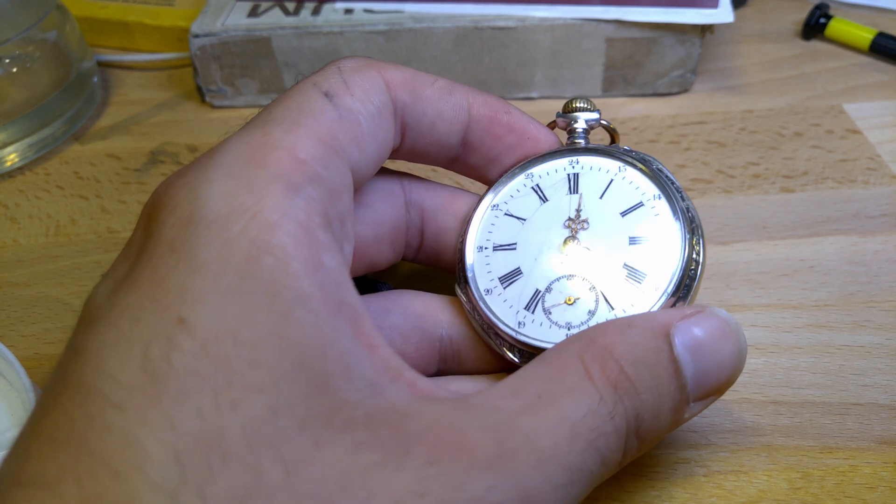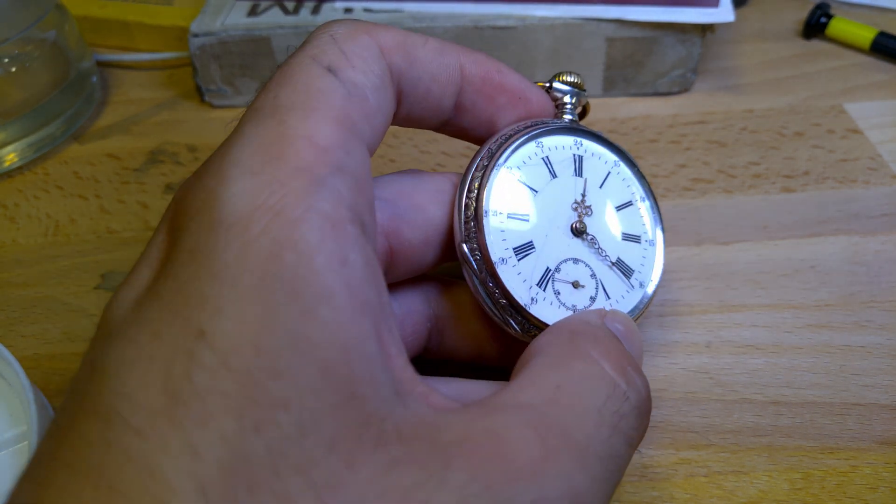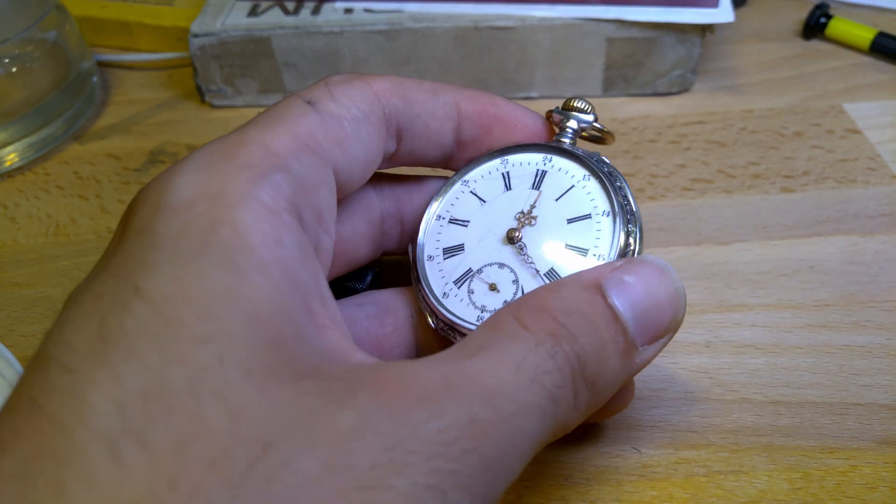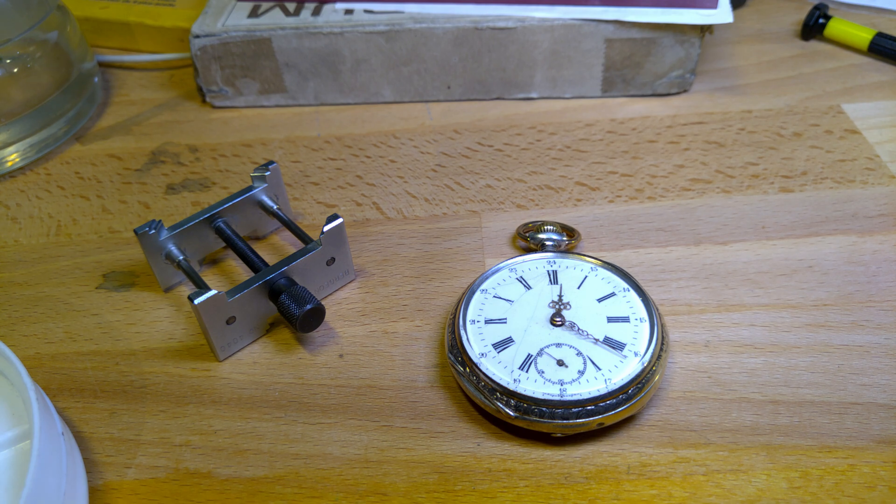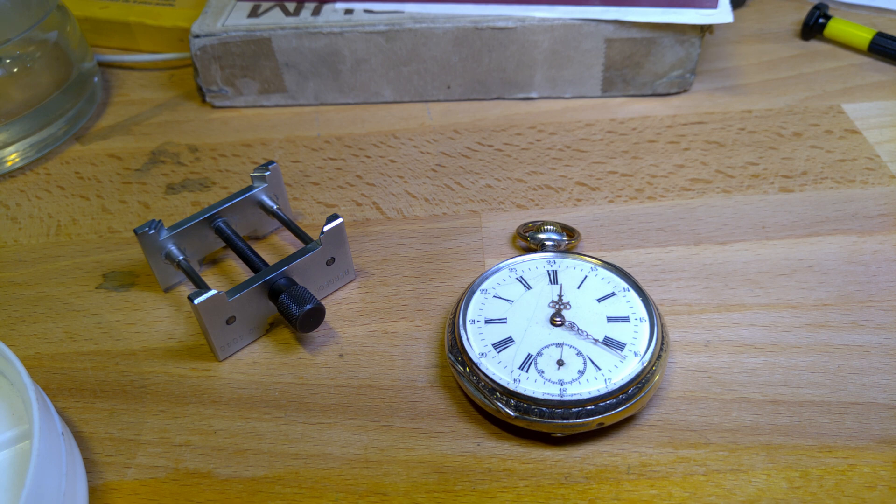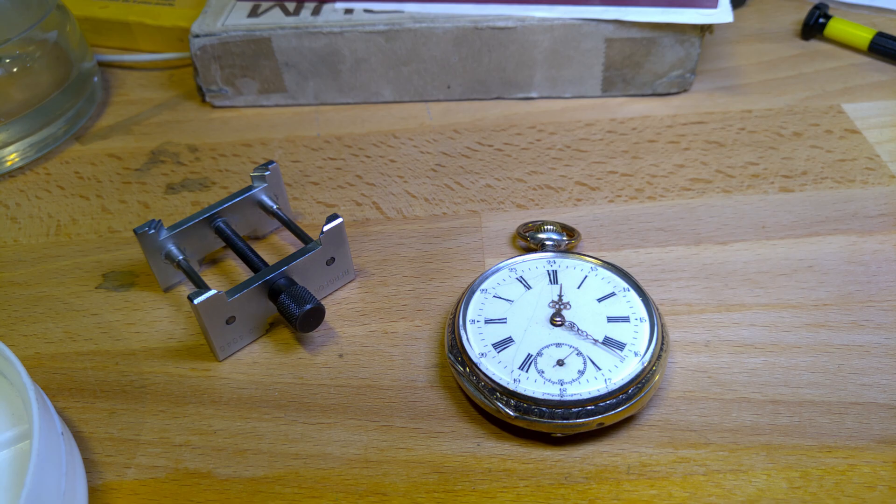So here we have the pocket watch in the final stage. You can see the case nice and polished. So yeah, that was a look at a pocket watch with a cylinder escapement and a bit of explanation about the cylinder escapement in general. I hope you found this video informative, you liked it, and see you in the next one. Bye bye!